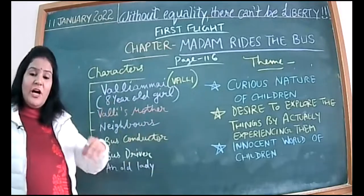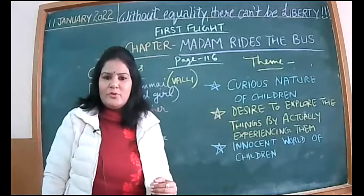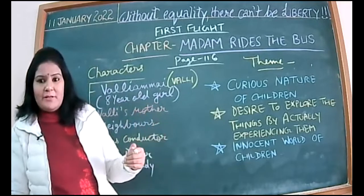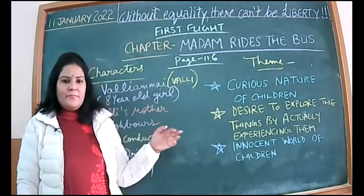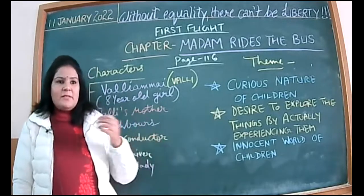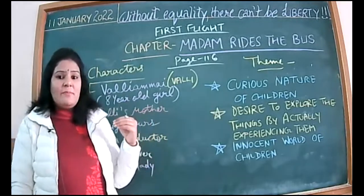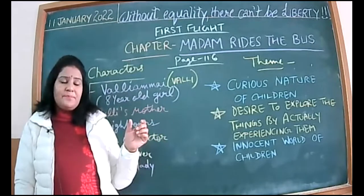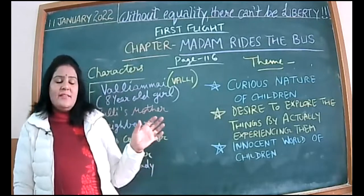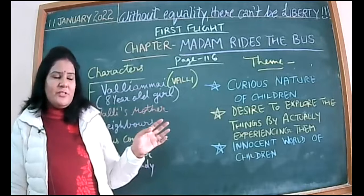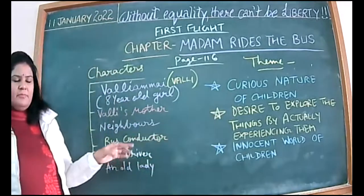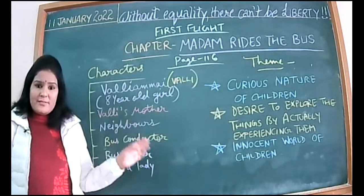Valli plans to ride the bus without her mother's knowledge. She was smart enough to listen to the conversations of her neighbors, who were daily commuters. She plans to go during the afternoon nap time when her mother is sleeping. The bus takes 45 minutes one way, so she calculates she can return within about two hours before her mother wakes up.